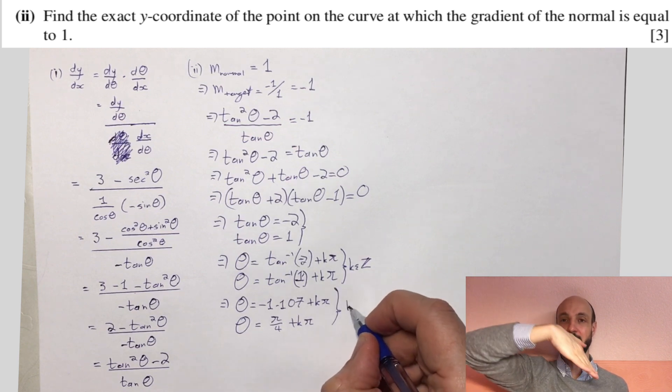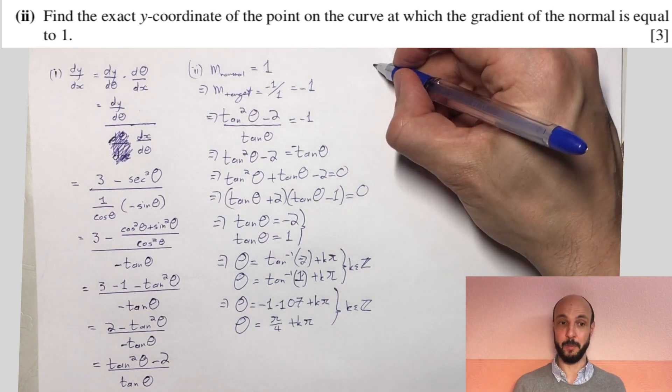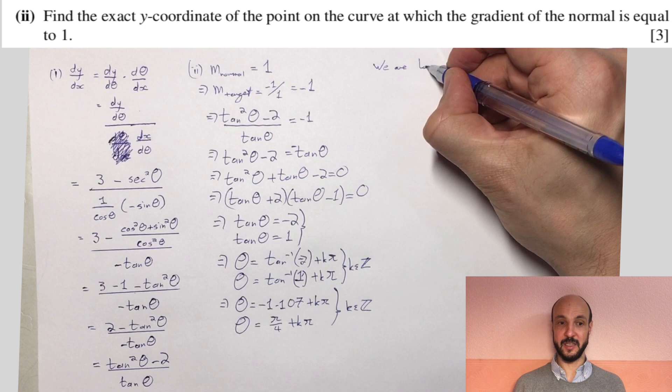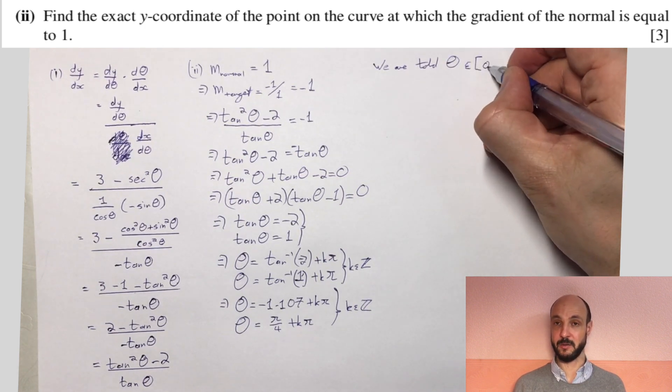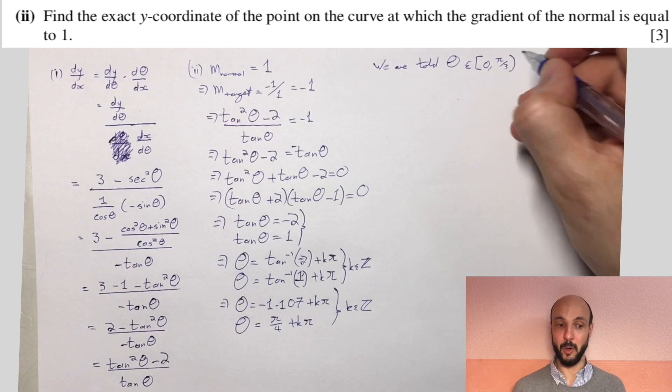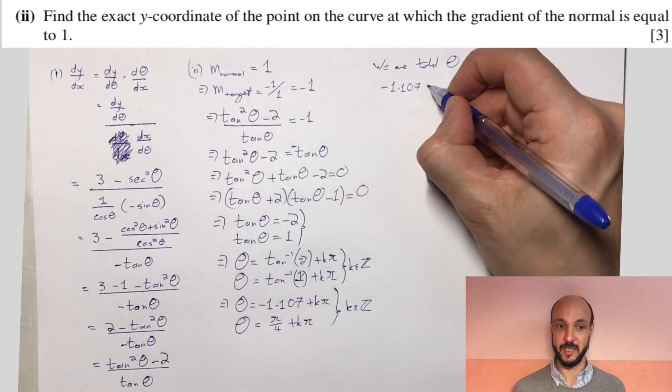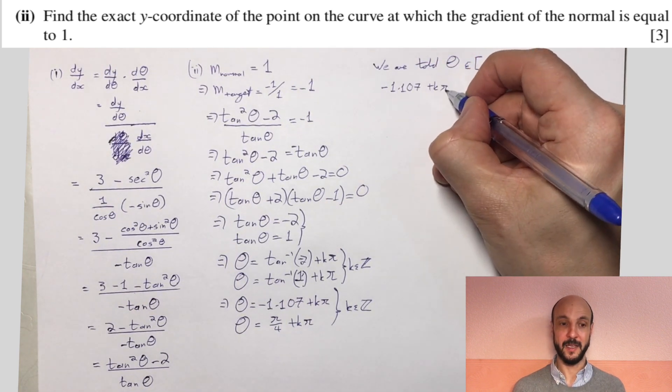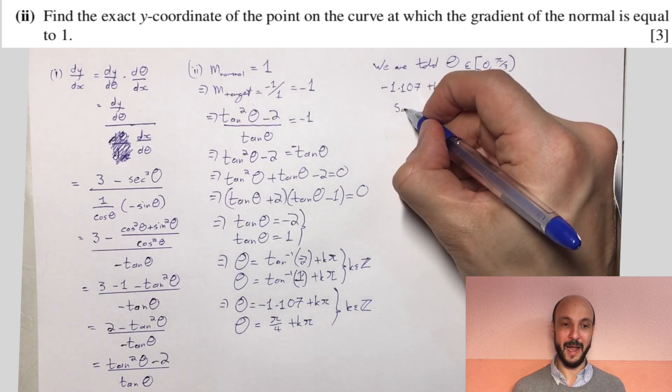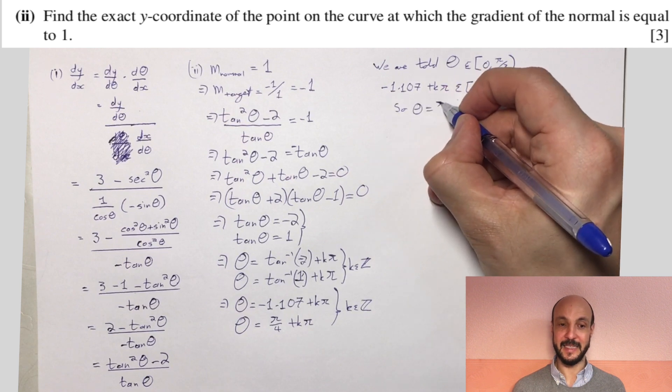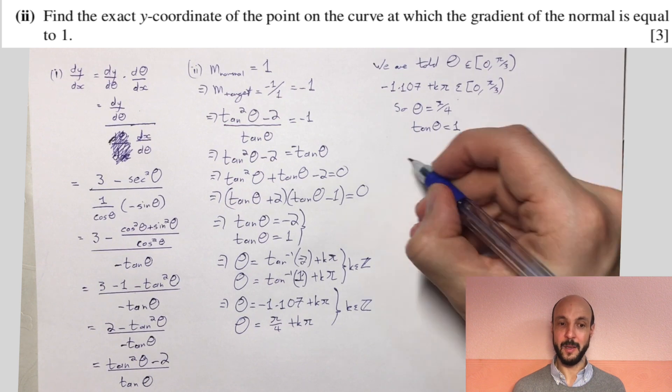The gradient of 1 is like a y equals x line, so it's a 45 degree angle. So π/4 plus kπ. Now we're told in the question that θ belongs to the interval from closed interval from 0 to an open π/2. Minus 1.107 plus kπ has no solutions in this interval, so our only solution is π/4. So θ is equal to π/4, and tan θ is equal to 1. So our y here is 3θ minus tan θ, which is going to be 3π/4 minus 1.